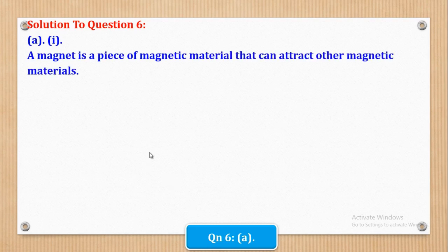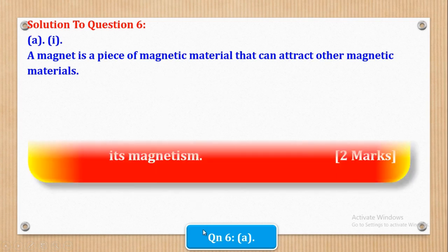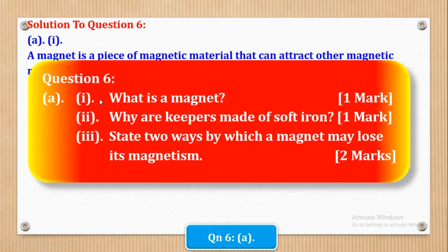So we shall say that a magnet is a piece of magnetic material that can attract other magnetic materials. So that was Roman 1.